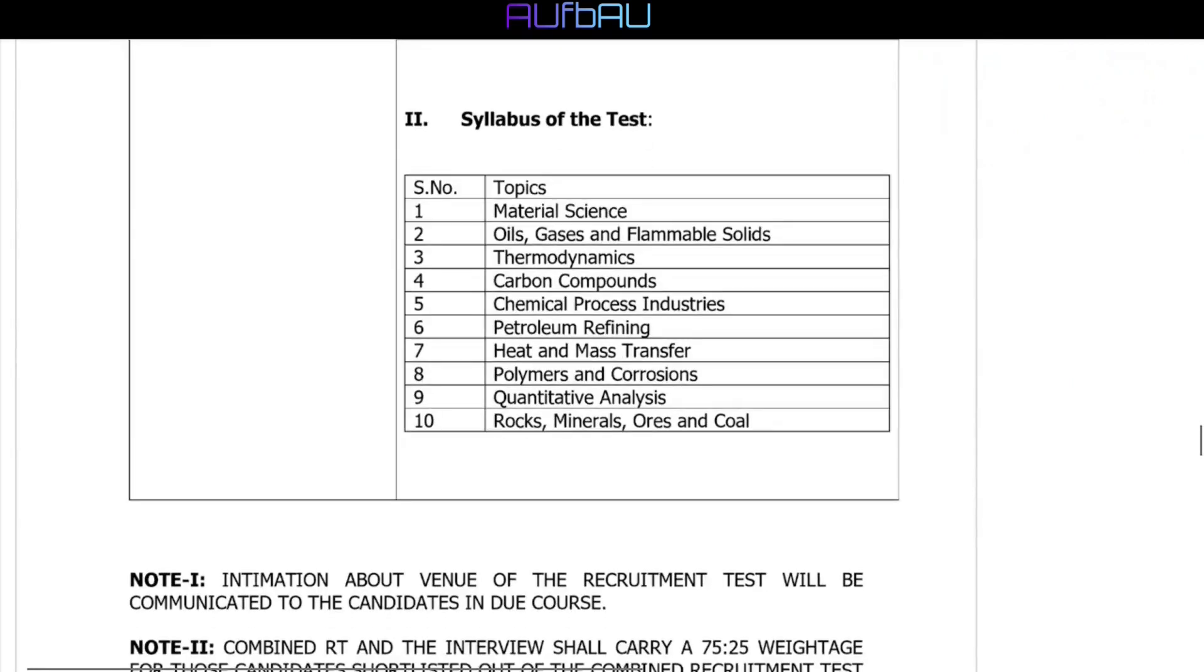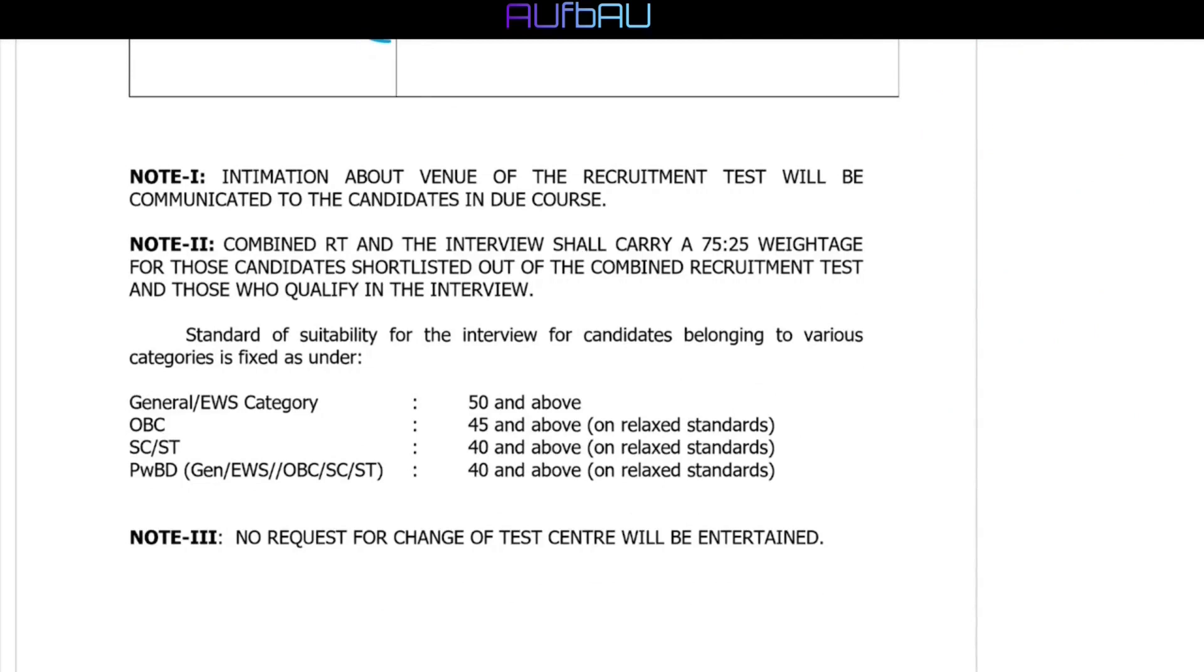But the problem was with the syllabus. The syllabus, if you notice carefully, among these 10 topics, only thermodynamics, carbon compounds, quantitative analysis and some parts of polymer, these were from actual chemistry portion. The others were completely from chemical engineering or engineering chemistry. The reason for this kind of syllabus is for GSI assistant chemist posts, both MSc chemistry students and BTech chemical engineering students were eligible as per UPSC. On the basis of written exam performance, some candidates will be called for interview. But the weightage of written exam to interview is 3 is to 1 that is 75% to 25%. The written exam was of 300 marks. So the interview will be of 100 marks. And the final merit list will be based on how much a student is getting in total 400 marks.